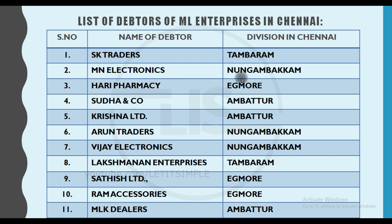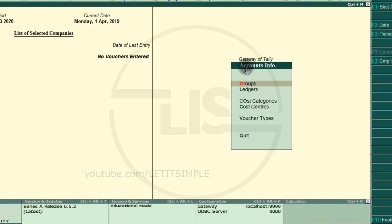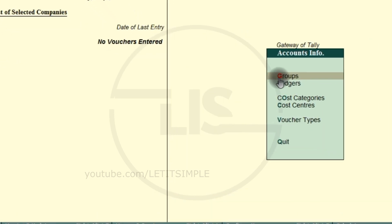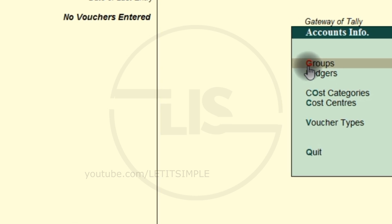So we would work in the debtors group and the EGMO group. We will check the group first. How to create the group: we will click on Accounting Info. We will see the letters in each line — press the letter, then press Groups, then press G.